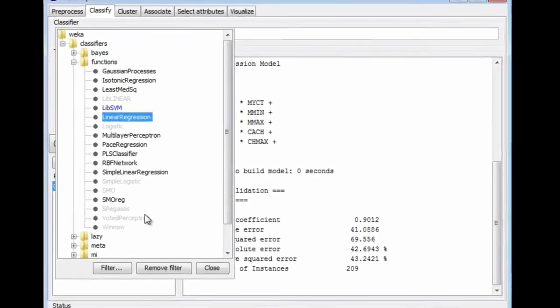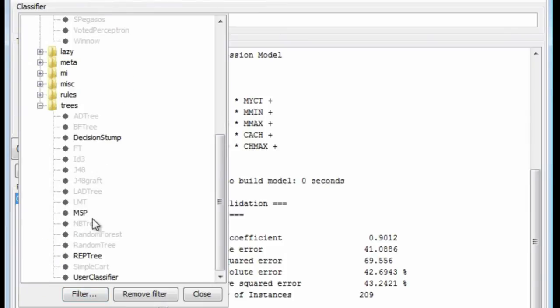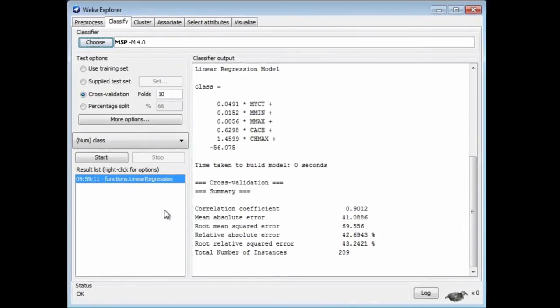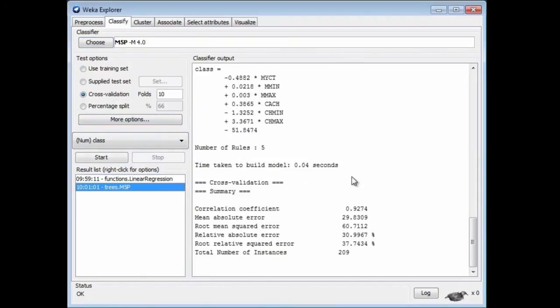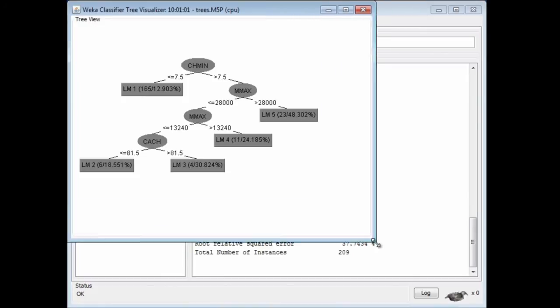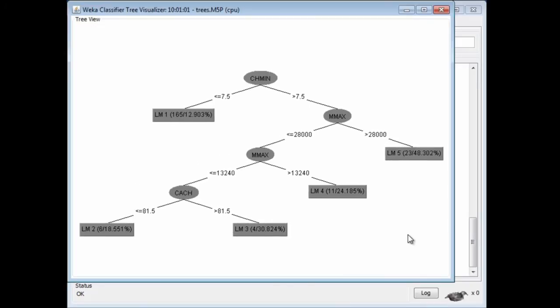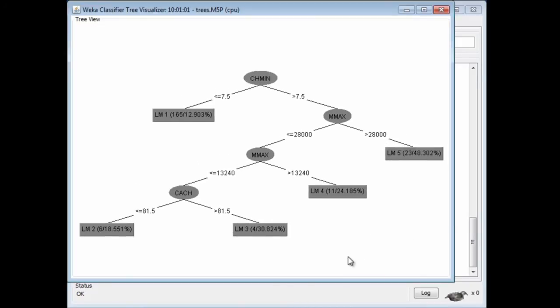There's a method under trees with a rather mysterious name of M5P. If we just run that, it produces a model tree. Maybe I should just visualize the tree here. Now I can see the model tree. It's similar to the one on the screen, on the slide.